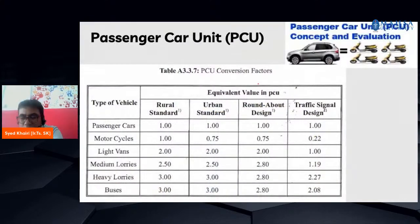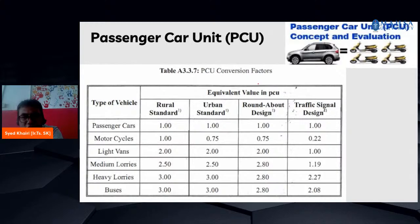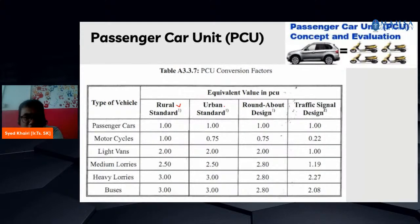When we do the traffic count, we need to convert vehicles into PCU — Passenger Car Unit. You need to find the equivalent factor: whatever vehicle is on the road is converted to the equivalent of one PCU, meaning one car. There are different equivalent factors depending on whether you are in a rural area, urban area, roundabout area, or traffic signal design area, so you need to know which area you are conducting the traffic count in.